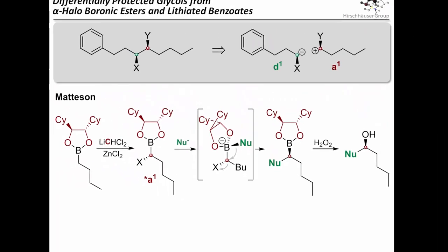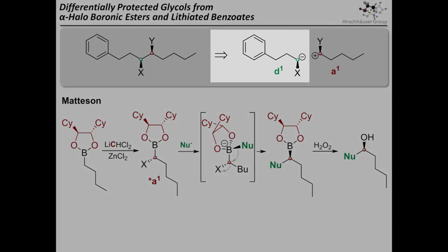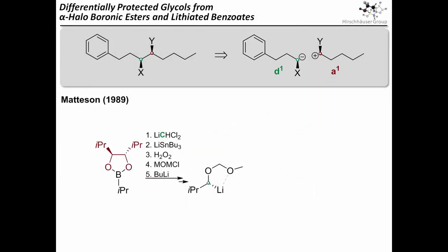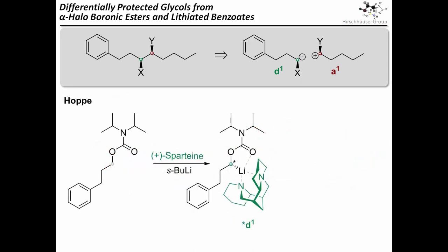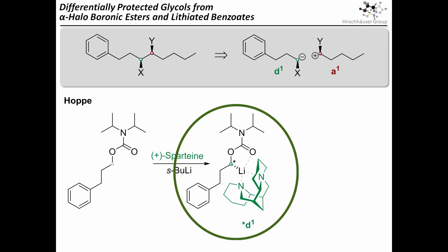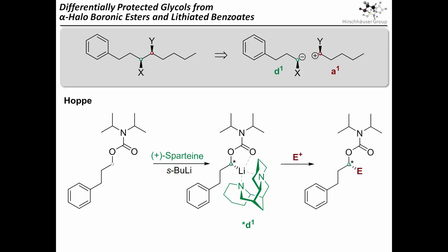But are there any chiral D1 reagents? What we would need would be a chiral carbanion. In the late 80s, Matteson must have thought in a similar manner, as he prepared a chiral carbanion from a boronic ester by homologation, substitution with a trimethyltin anion, oxidation, MOM protection, and finally a tin-lithium exchange. Hoppe showed us that you can deprotonate carbonates in an enantioselective manner when using a combination of s-BuLi and sparteine, giving a chiral carbanion directly which can be reacted with numerous electrophiles. Could one of these electrophiles be an alpha-haloboronic ester?